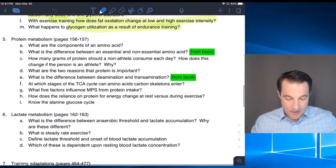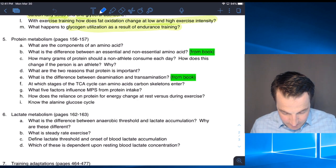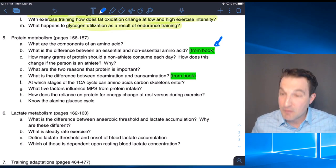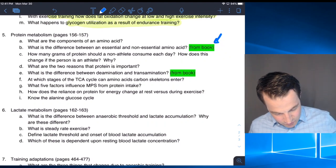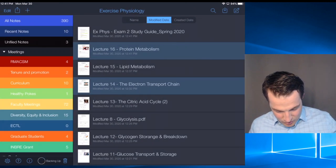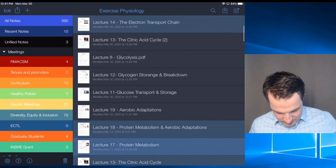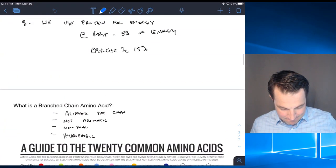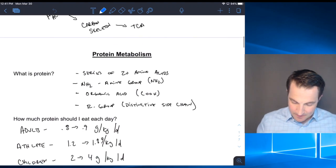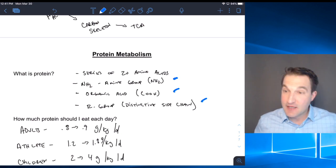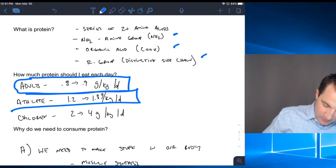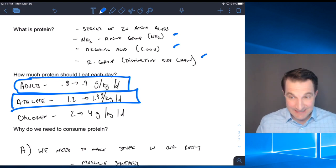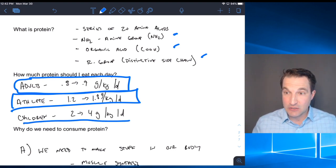For protein metabolism, components of our amino acid are the amine group, organic acid, and R side chain. Adults need about 0.8 to 0.9 grams per kilogram. Athletes go up about double, 1.2 to 1.8 depending on the type of athlete. Children have a much higher need. Understanding what those grams are per kilogram is going to be important.